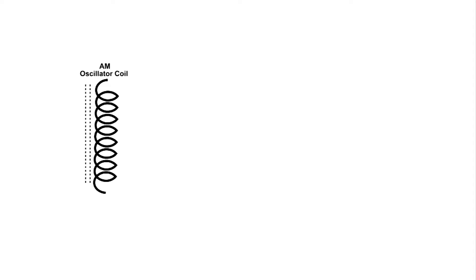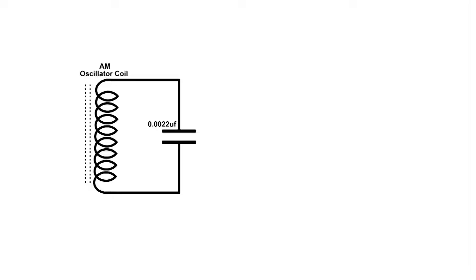Here is an RF coil — an oscillator coil from an AM radio. I'm going to connect this 0.0022 microfarad capacitor to it, and in this configuration it makes a tank circuit. When you do that, this circuit will want to oscillate at a natural frequency for both the coil and that capacitor, known as the resonant frequency.